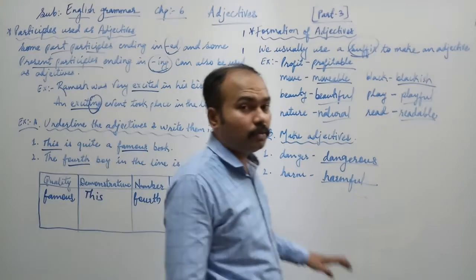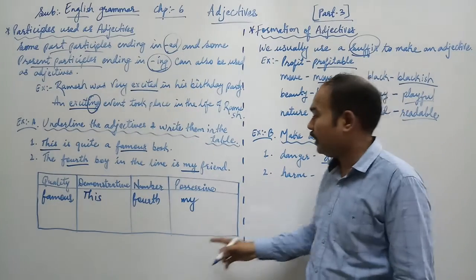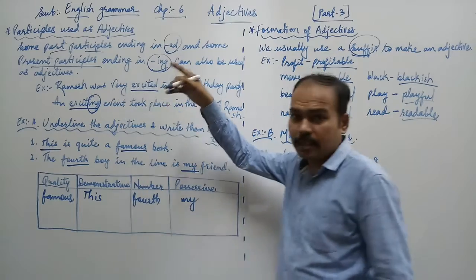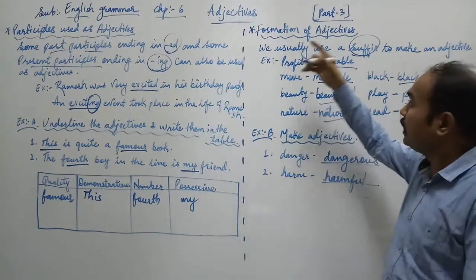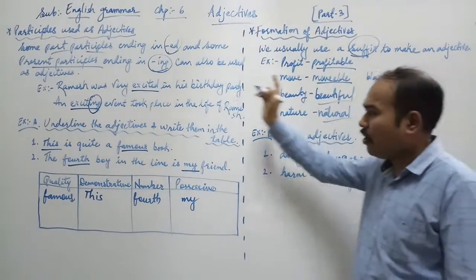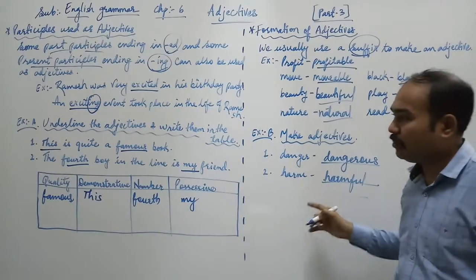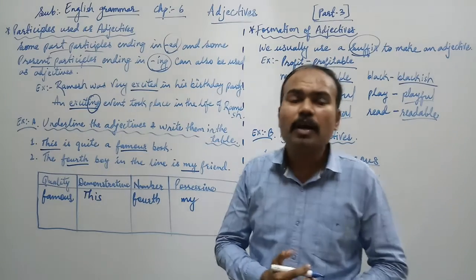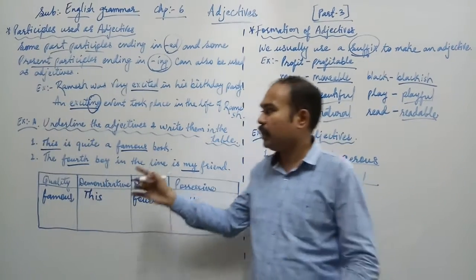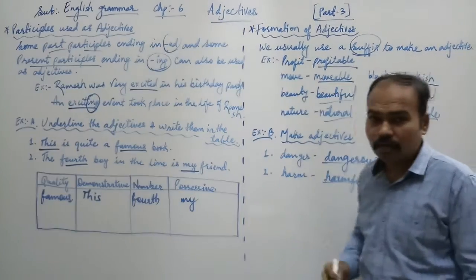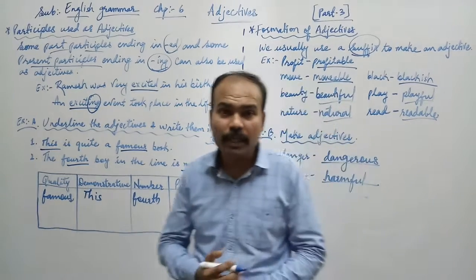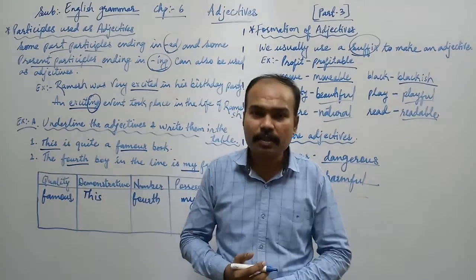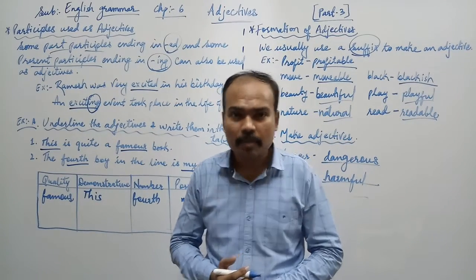Students, in this way you have to solve the exercise number A and B. So students, in this video we have studied use of participles, the past and the present participles, then formation of adjectives. Also we have solved exercise A and B. These things you have to write in your notebook. And you have to try to find an answer in the textbook for exercise A and B also. So students that's all for today. I hope you understood. If any difficulty or doubts we will sort it out in the Google Meet. So thank you and bye bye.